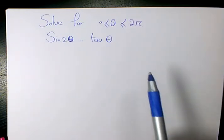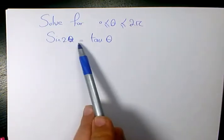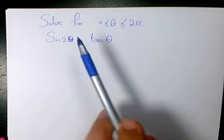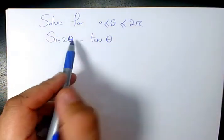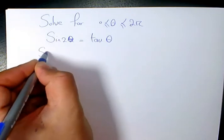The trigonometric equation I want to solve for you is sin(2θ) = tan(θ), and θ is changing from 0 to 2π. So sin(2θ), from double angle formulas,